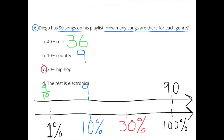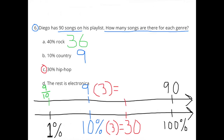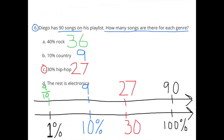C: 30% hip hop. I kept the same double number line and multiplied 10% by 3 to get 30%. Doing the same to the song count, 9 songs times 3 equals 27. Diego has 27 hip hop songs on his playlist.